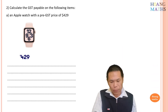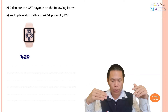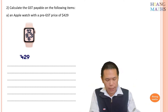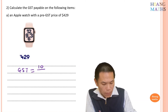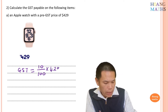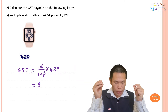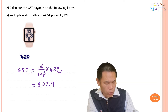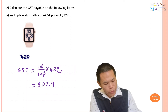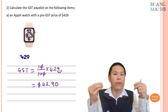Welcome back. Part a: we need to pay 10% GST on $429. GST equals 10 over 100 times 429. Cancel the 100 with the 10 — that gives 429 divided by 10. Moving the decimal point gives 42.9, and written to two decimal places that's $42.90. So the tax on $429 is $42.90.